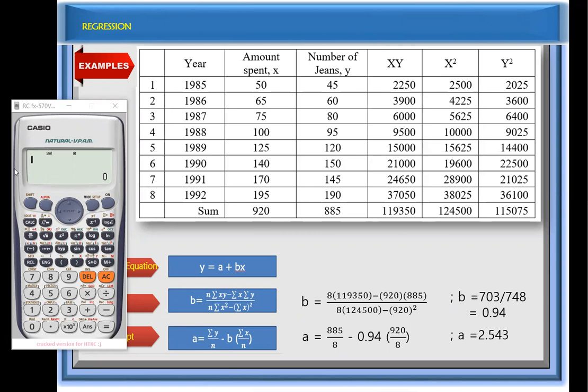So to do that, we're going to use this calculator. Again, always clear the memory, so we're going to press mode one. And since we're done with that, press mode, and then we will now proceed to stat, which is number three. And we have number two, which is a plus bx, so number two.